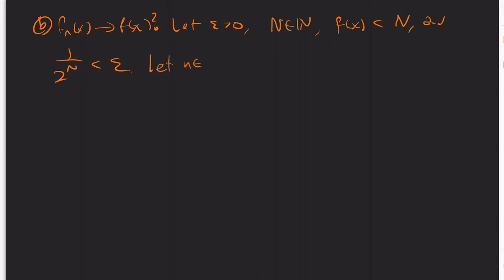So let's go to a different page here now. So now let's show convergence. So the same X that I'm fixing. So question mark. Let epsilon be positive. And N in the natural numbers with F of X less than N and 1 over 2 to the N less than epsilon. We can choose N large enough such that that is the case. Pick N greater than N.